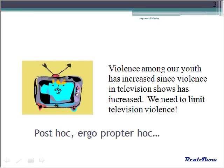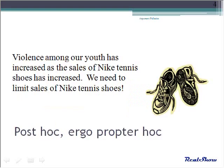A little more on post hoc, ergo propter hoc: when this assumption is made about things that seem likely, we often believe it without questioning. For example, an arguer says that television viewing increases violence in youth. Again, these things did happen one after the other, and it seems so likely that one resulted from the other that we may not question it. However, you can see the fallacy when we alter the argument just slightly. Both arguments imply cause and effect — one is obviously ridiculous. Be wary of the ones that seem plausible but still offer no proof. You may have to look for the proof yourself.